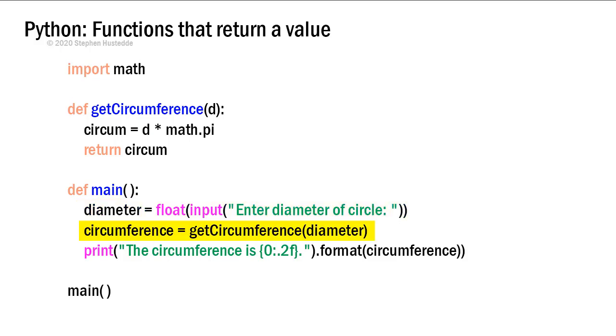Then I have circumference, another variable, equals getCircumference, and that's going to be a call to my getCircumference method or function, and I'm passing it the value of diameter, which goes into the variable d of that function. And in that function then we have a variable called circum. It equals d times math.pi, and we return circum.